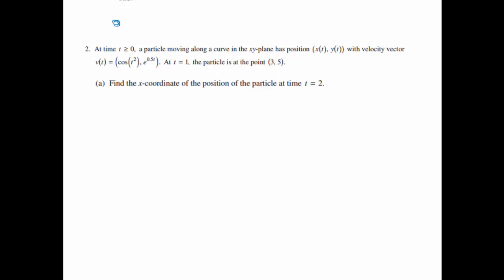Number 2. At time t greater than or equal to 0, a particle moving along a curve in the xy plane has position (x(t), y(t)), with velocity vector v(t) equaling (cosine t squared, e to the 0.5t). At t equals 1, the particle is at the point (3, 5). Find the x-coordinate of the position of the particle at time t equals 2.